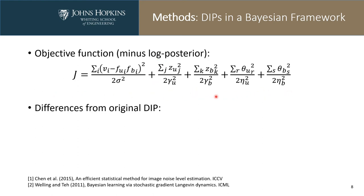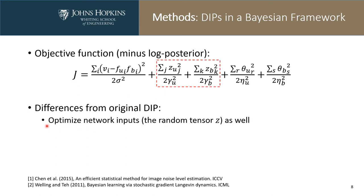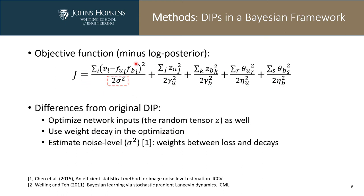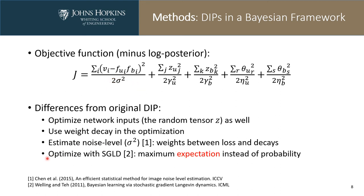From this formula, we can see there are some differences from the original deep image prior. First, we optimize the network inputs as well. Second, we use weight decays in the optimization. Third, the weighting between the MSE loss and the weight decays depends on sigma squared, so we have to estimate the noise level for each specific image. Fourth, instead of maximizing the probability of the posterior, we choose to maximize the expectation to get better accuracy using an optimization algorithm called SGLD.